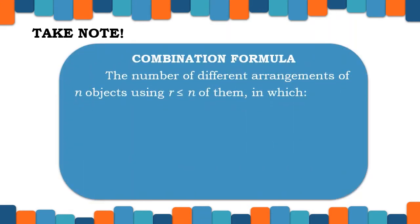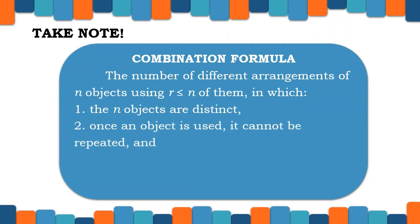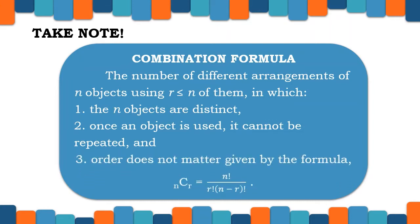The number of different arrangements of N objects using R, where R is less than or equal to N, in which: number 1, the N objects are distinct; number 2, once an object is used it cannot be repeated; and number 3, order does not matter. This is given by the formula: nCr = N factorial all over R factorial times the quantity (N minus R) factorial.